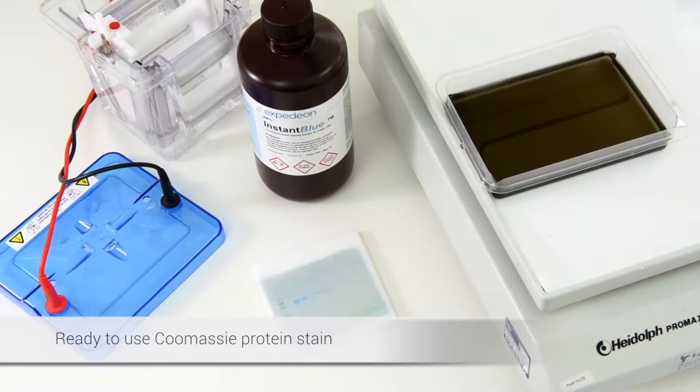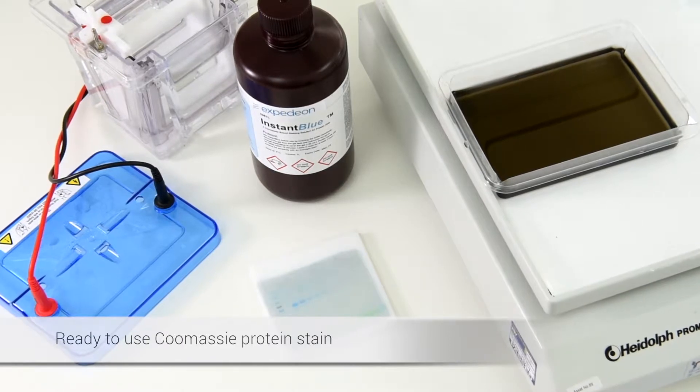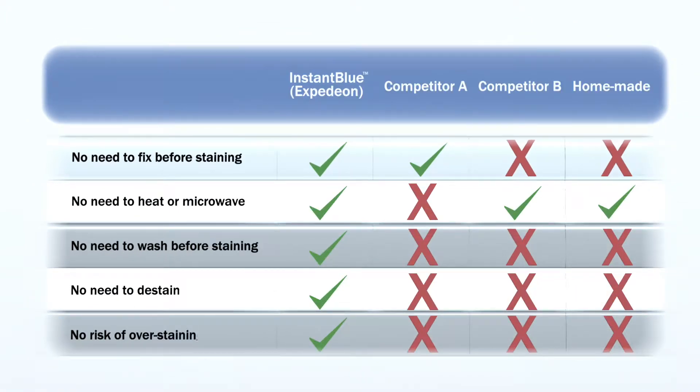InstantBlue is a ready-to-use Coomassie protein stain for polyacrylamide gels. Thanks to its optimized formulation, InstantBlue stains your gel in a single-step incubation without the need for fixing, microwaving, washing, or de-staining.